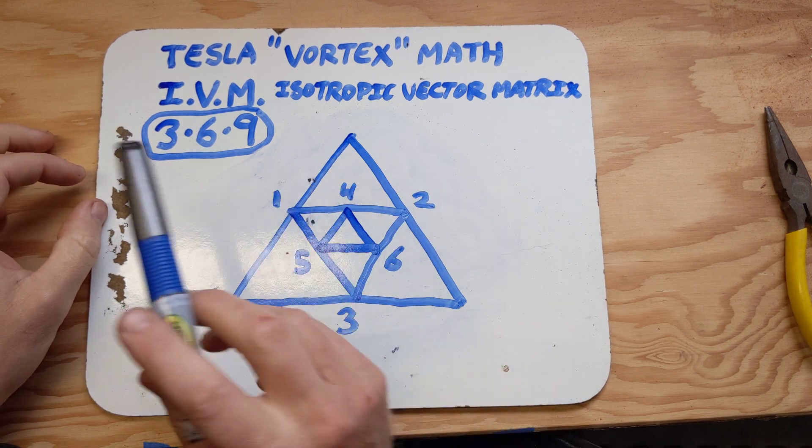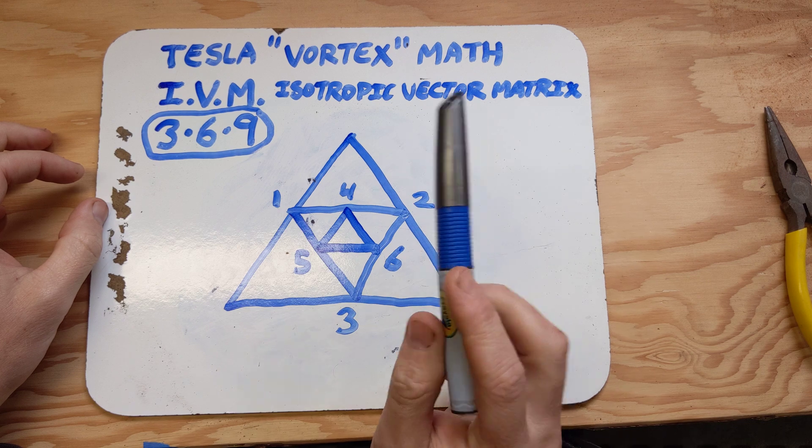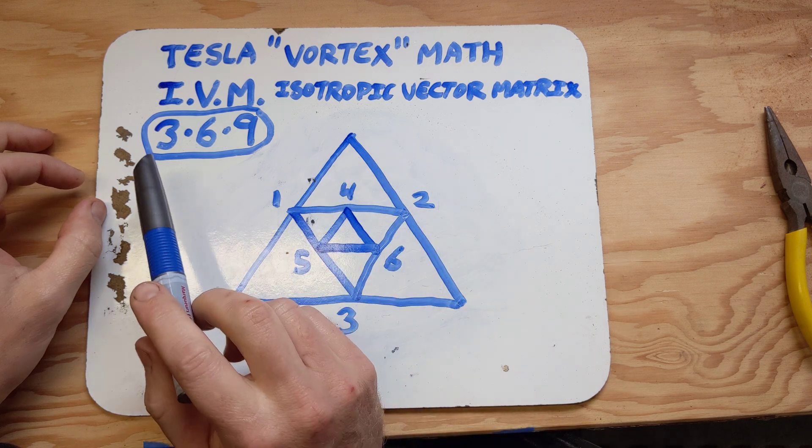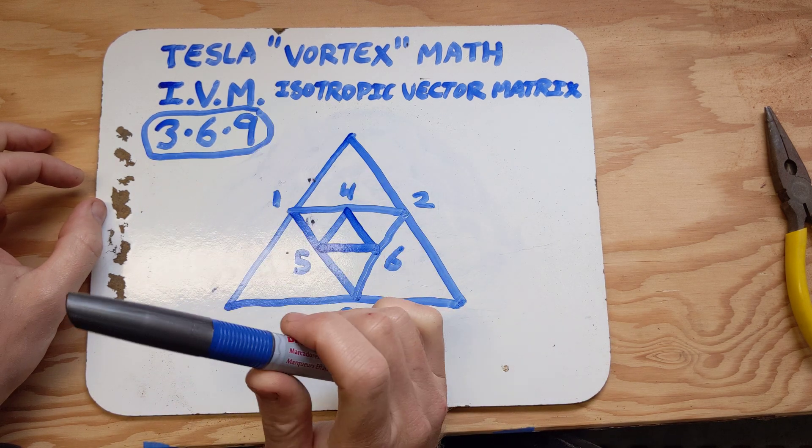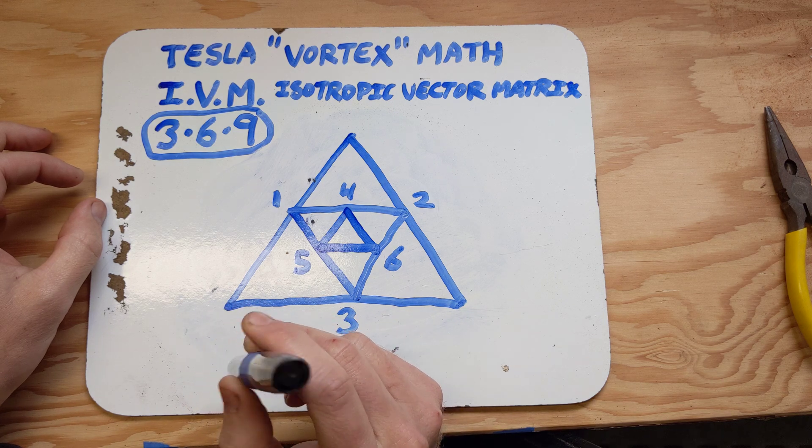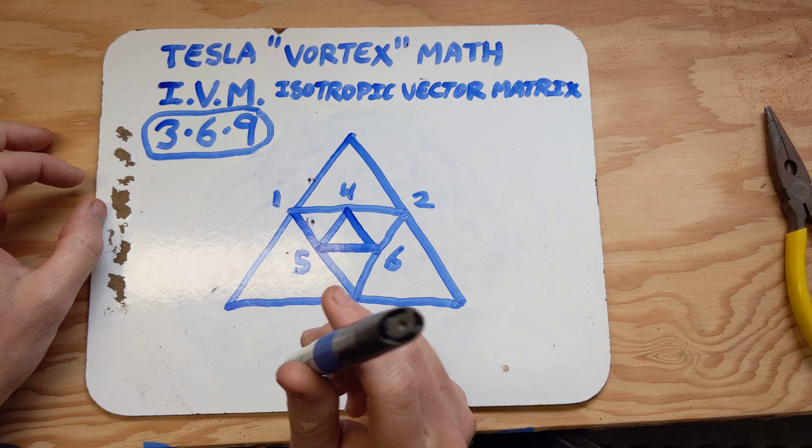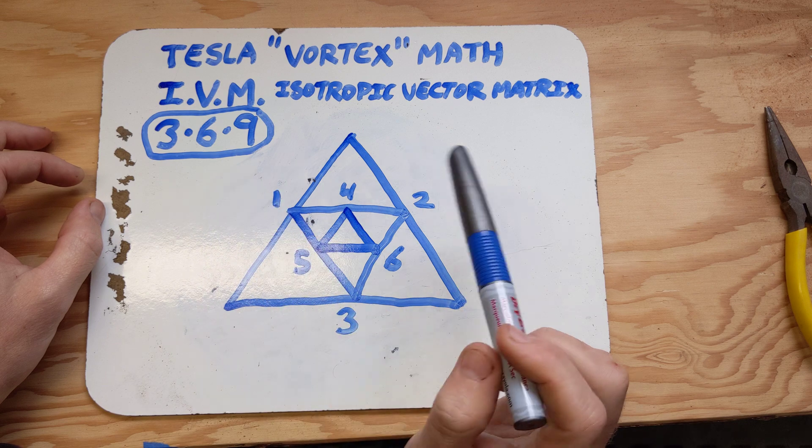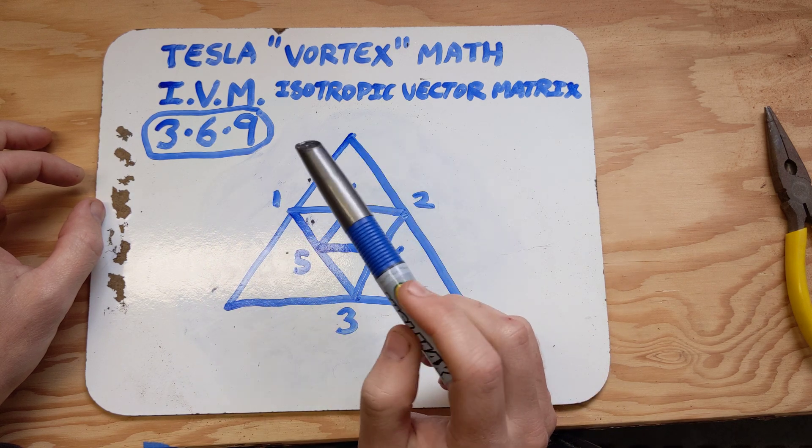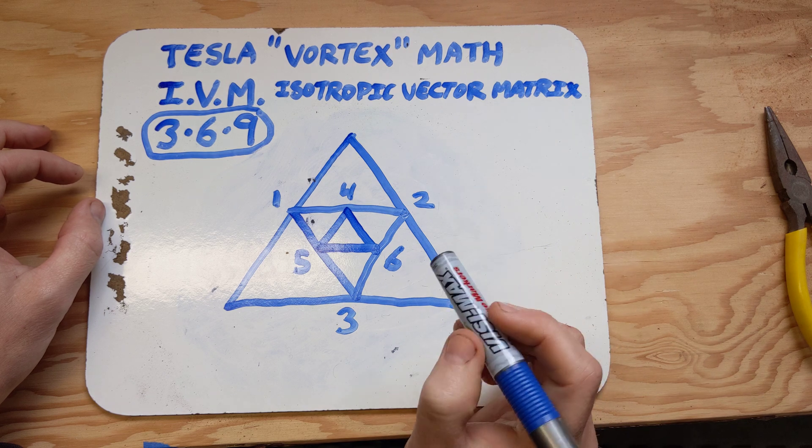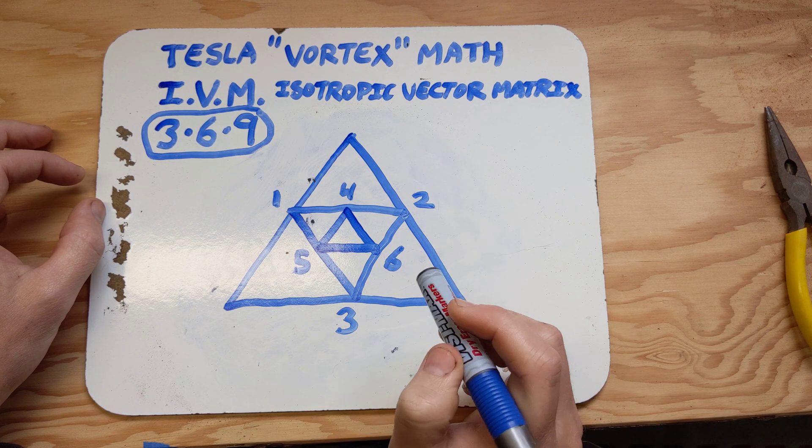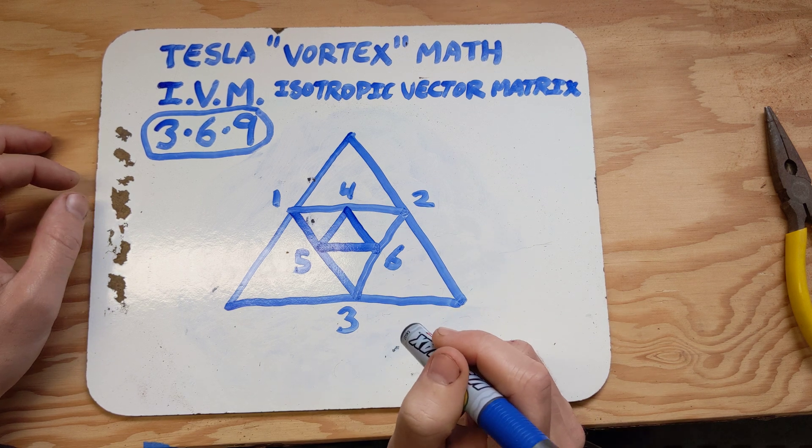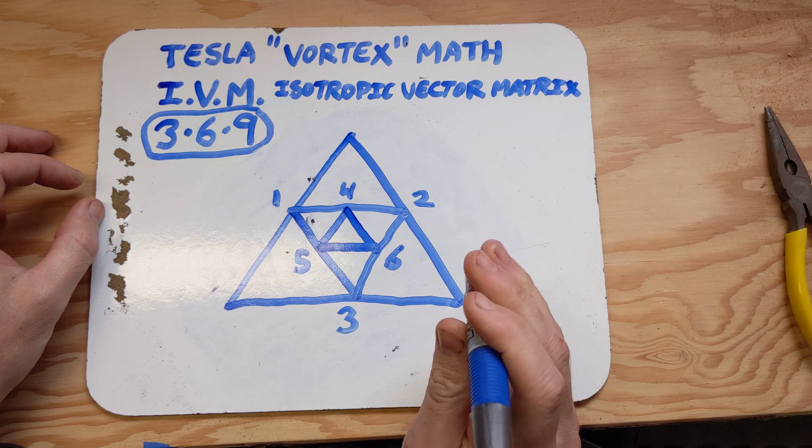So Tesla vortex math doesn't make any sense classically as it's defined in these viral videos. And like I said, they've been debunked. But I think 3, 6, 9, you know, Tesla also, there's that famous quote of him about if you want to understand the universe, frequency, modulation, understand those things or something along those lines. Yeah, 369, frequency, isotropic vector matrix - these things make a lot more sense to me than just an arbitrary circle that has some factoring possibilities. So yeah, share your thoughts and thanks for watching.